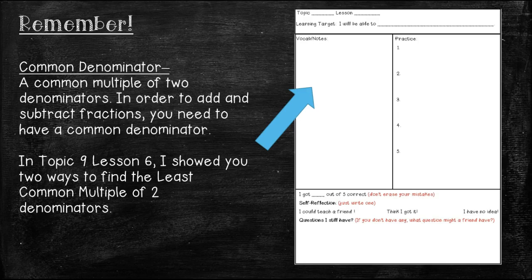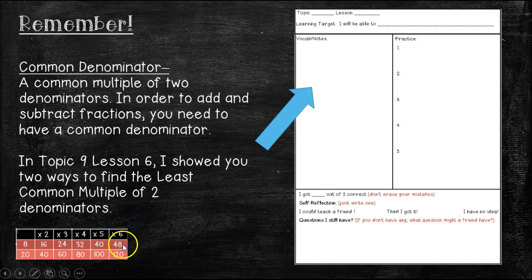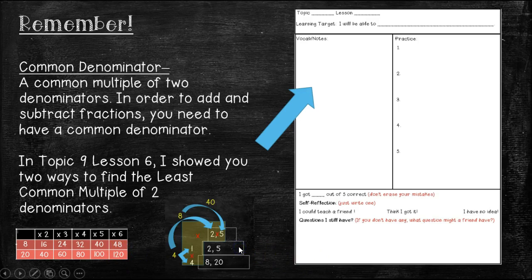So again, Topic 9, Lesson 6, I showed you two ways to find the least common multiple of two denominators. You can either go through and make a table and list all of the multiples of each denominator, or you can do the wedding cake strategy, whichever one works best for you.